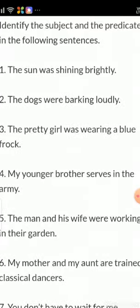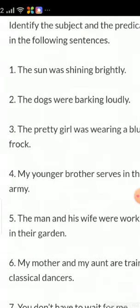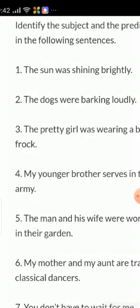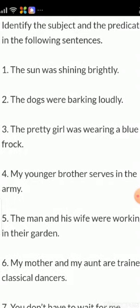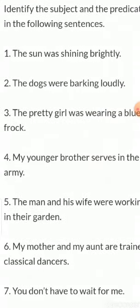Q4: My younger brother serves in the army — mera chota bhai, uska job kahan? Army mein. My younger brother subject, serves in the army predicate. Q5: The man and his wife were working in their garden — man aur uski biwi garden mein kaam kar rahe the. Man and his wife subject, working in the garden predicate. Q6: My mother and my aunt are trained classical dancers — meri mummy aur meri auntie trained classical dancers hain. My mother and my aunt subject, are trained classical dancers predicate. Q7: You don't have to wait for me — you is the subject, don't have to wait for me is predicate.